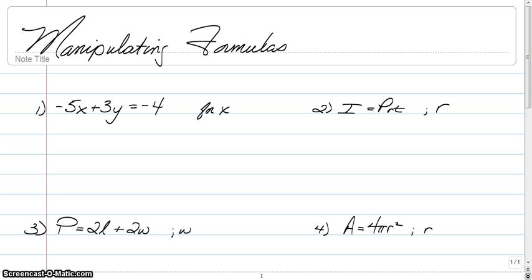For this first one, we're just going to solve for x. So here's our equation, we're going to solve for x. That means we're going to get x by itself.